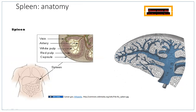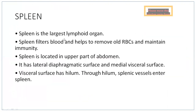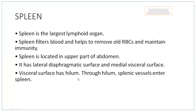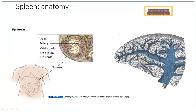The spleen is present in the abdominal region. It is the largest lymphoid organ; it filters blood, helps remove old RBCs, and maintains immunity. The spleen is located in the upper part of the abdomen with a lateral diaphragmatic surface and a medial visceral surface. The hilum is the entry-exit point where the splenic artery moves inside and the splenic vein exits. Splenic vessels enter at the hilum.